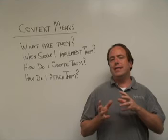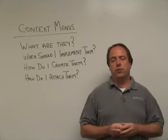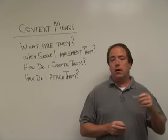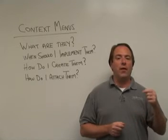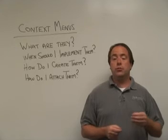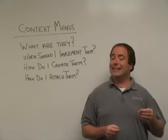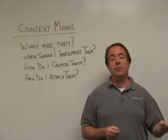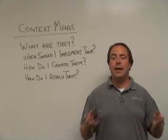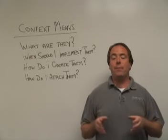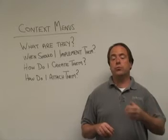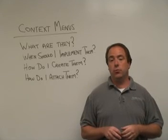Now that I have it built, how do I connect it to my controls on a form? That's truly the easy part. With one command — either on the got focus event of each of the controls or the create event of your window — you just call the function called context menu, passing in the name of the control and the message create menu. When the end user right clicks, it will display what was created using the context menu builder.